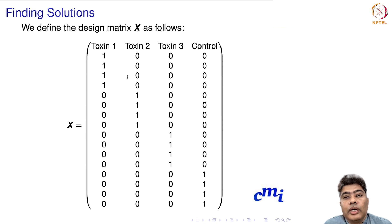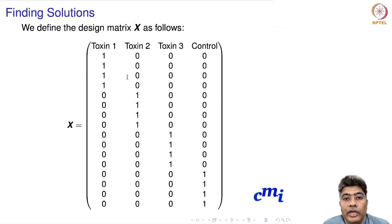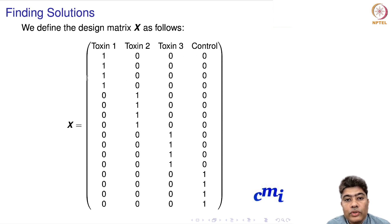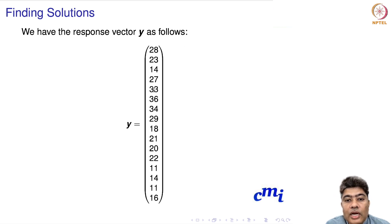This is called creation of dummy variables in statistics. In machine learning it is often called one-hot encoding. This one-hot encoding is very useful for solving many problems, and we will see soon how it makes our life very simple. For each sample we have one row: if it belongs to a particular toxin group it gets a 1, otherwise it gets a 0.